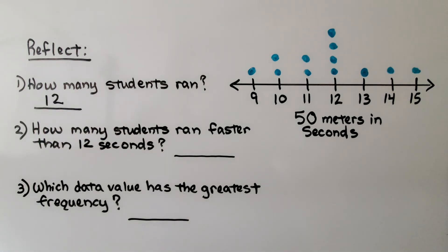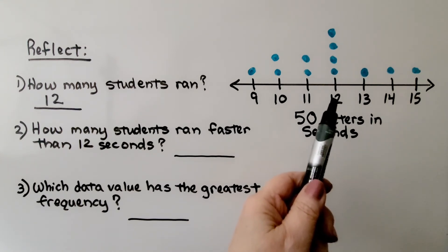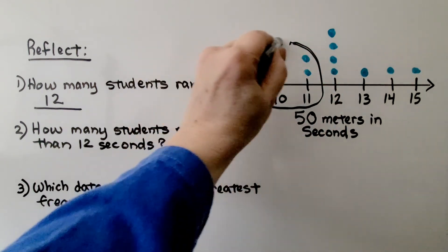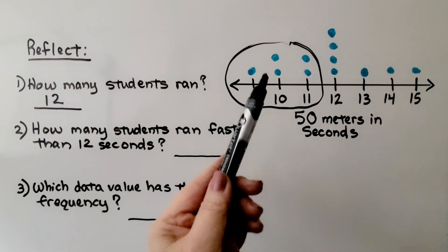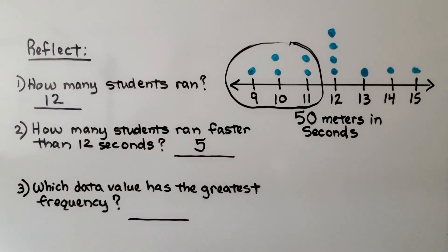How many students ran faster than 12 seconds? Well, here's 12 seconds and ran faster than 12 seconds would be this group. We count them. There's 5. We know 5 students ran faster than 12 seconds.